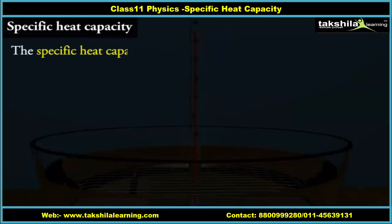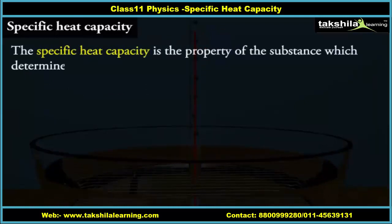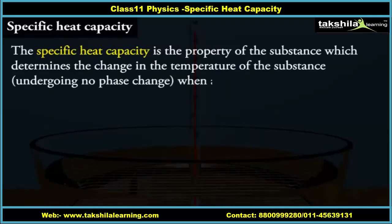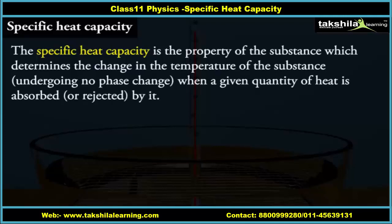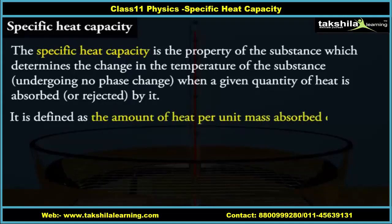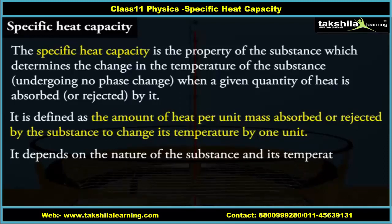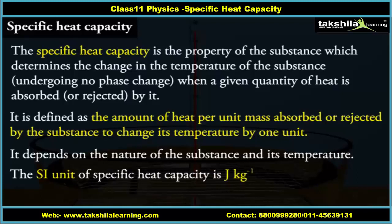The specific heat capacity is the property of the substance which determines the change in the temperature of the substance — undergoing no phase change — when a given quantity of heat is absorbed or rejected by it. It is defined as the amount of heat per unit mass absorbed or rejected by the substance to change its temperature by one unit. It depends on the nature of the substance and its temperature. The SI unit of specific heat capacity is Joule per kilogram per Kelvin.